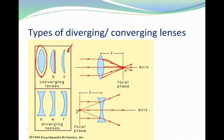Here are some different diverging lenses: biconcave, concave-planar, and concave-convex. As long as it's thinner in the middle and thicker on the outside, you have a diverging lens.